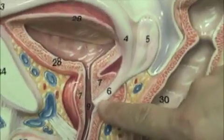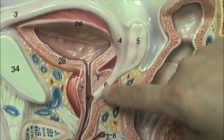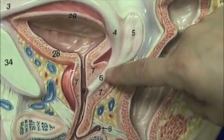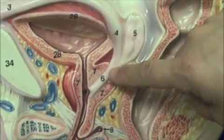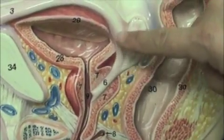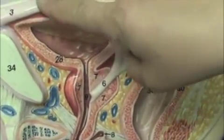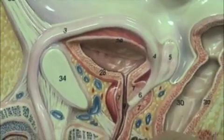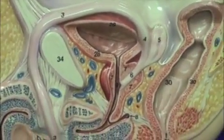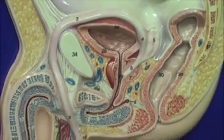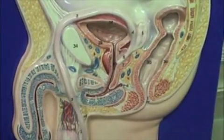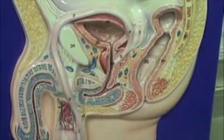This tube entering here at the prostate gland is the common ejaculatory duct. And if you can follow it all the way in this direction here, this is the ductus deferens, or the vas deferens as most people call it.